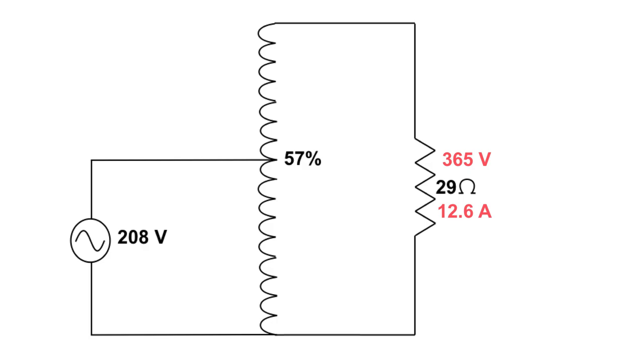Our next step is figuring out what the power being dissipated at this load is. Let's do that by taking 365 volts and multiplying it by 12.6 amps. That works out to be 4600 watts. So we've determined the voltage, we've determined the current, and we've determined the power being dissipated at the resistor.